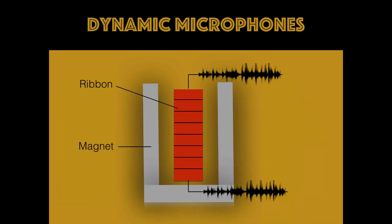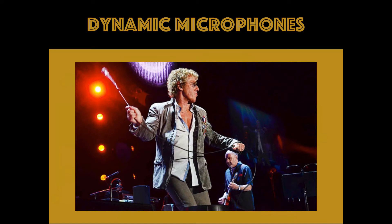A ribbon microphone has the same idea but just has different parts in a different design. It still creates variable electrodynamic voltages from a moving element within a magnetic field. However, instead of a coil, there is a very thin sheet of metal that acts as both the diaphragm and the element. This sheet of metal, or ribbon, hence the name, is suspended in between two magnets, which moves back and forth in relation to the compression and rarefaction of the sound wave.